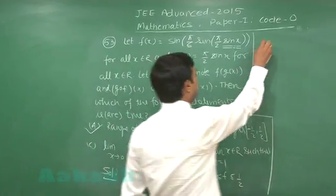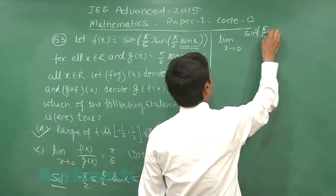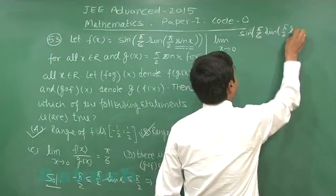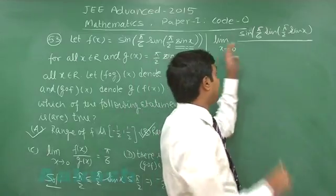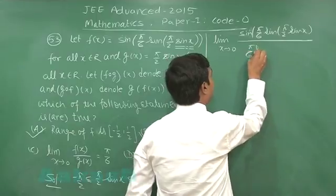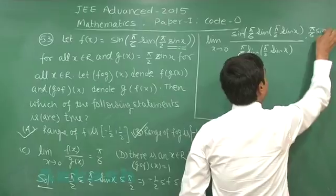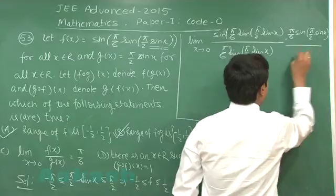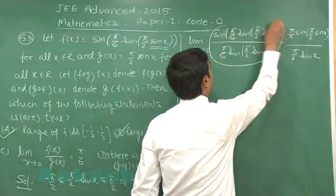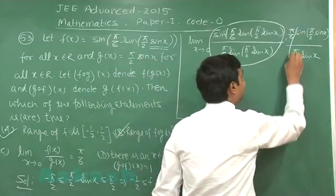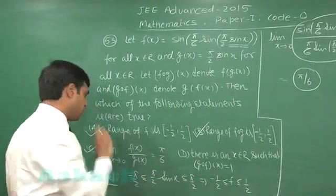For option c, we evaluate the limit as x→0 of f(x)/g(x). This is sin(π/6 · sin(π/2 · sin x)) divided by π/2 · sin x. It's a 0/0 form, so we use the sin θ/θ → 1 form. Multiply and divide by π/6 · sin(π/2 · sin x). As x→0, both sin(π/2 · sin x)/(π/2 · sin x) → 1 and the other factor → 1, giving the result π/6. So option c is also correct.